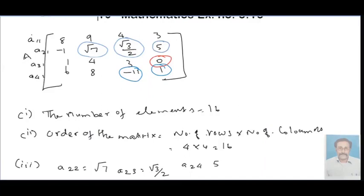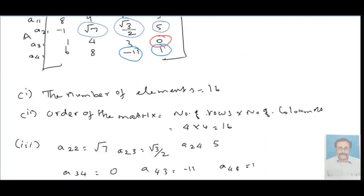For part three, A34 equals 0, then a equals minus 11, and a equals 1.